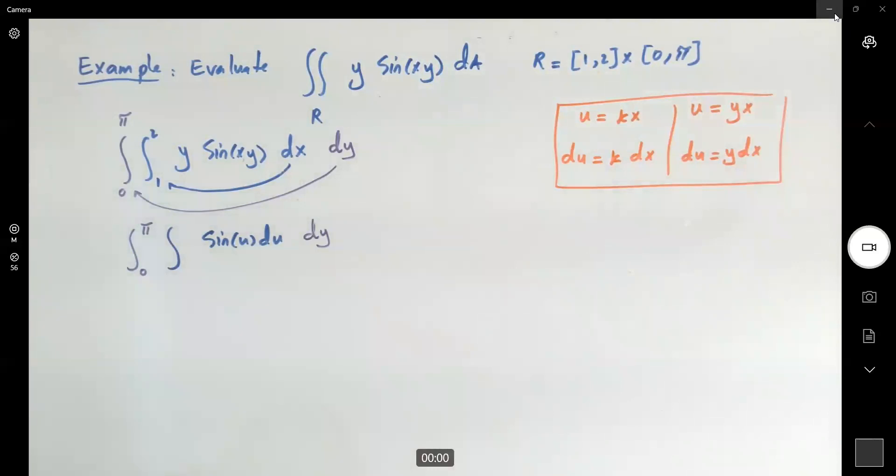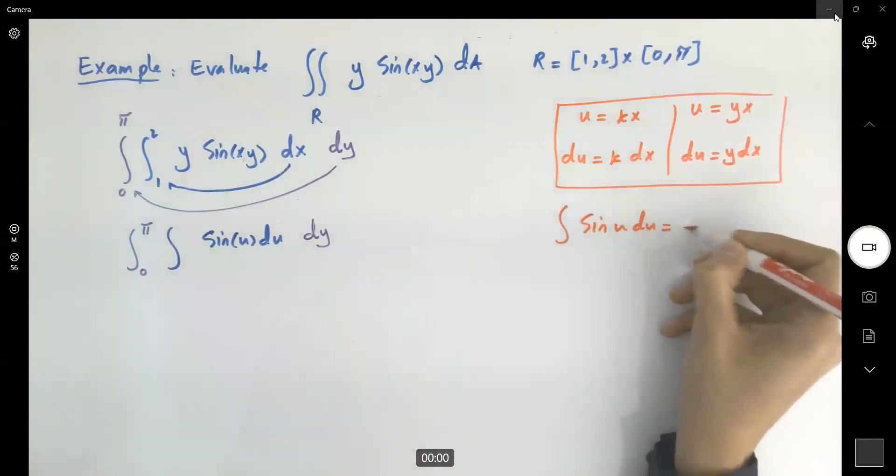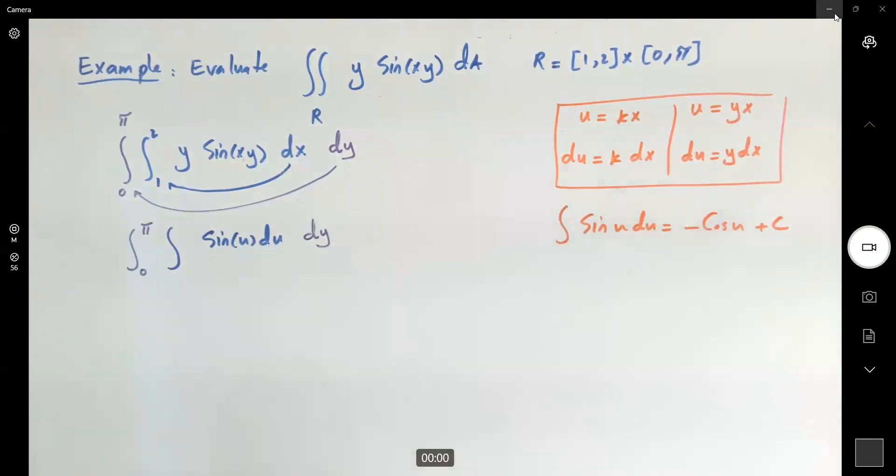Very well, the integral of sine, as you remember, is negative cosine. The integral of sine u, du is negative cosine u. That's the constant of integration, but we are not worried about that, because we want to find the definite integral.